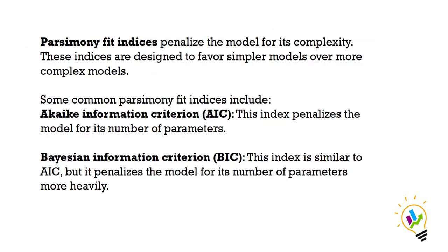The third type of fit indices is parsimony fit indices. These penalize the model for its complexity and are designed to favor simpler models over more complex ones. Generally, we don't use these in analysis — we mainly use absolute and incremental fit indices — but the two parsimony indices are the Akaike Information Criteria (AIC) and the Bayesian Information Criteria (BIC).